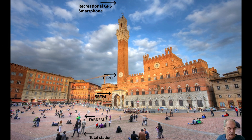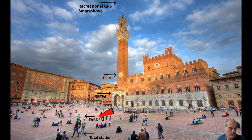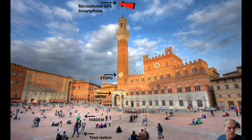Another way to visualize the quality of a digital elevation model is through a silhouette illustration. On the ground we have the correct elevation where the person stands. Then we have a standard deviation of maximum one meter above the person — that is our FAB DEM's maximum error. Then SRTM is shown at the level of the main gate, and ETOPO even higher.